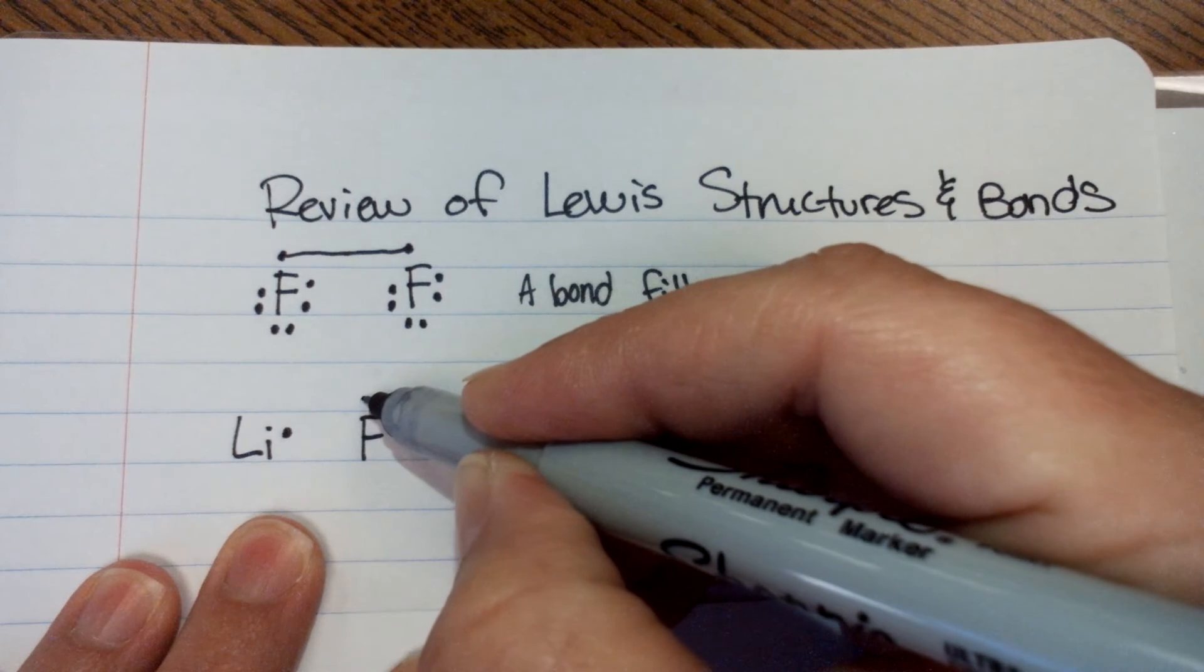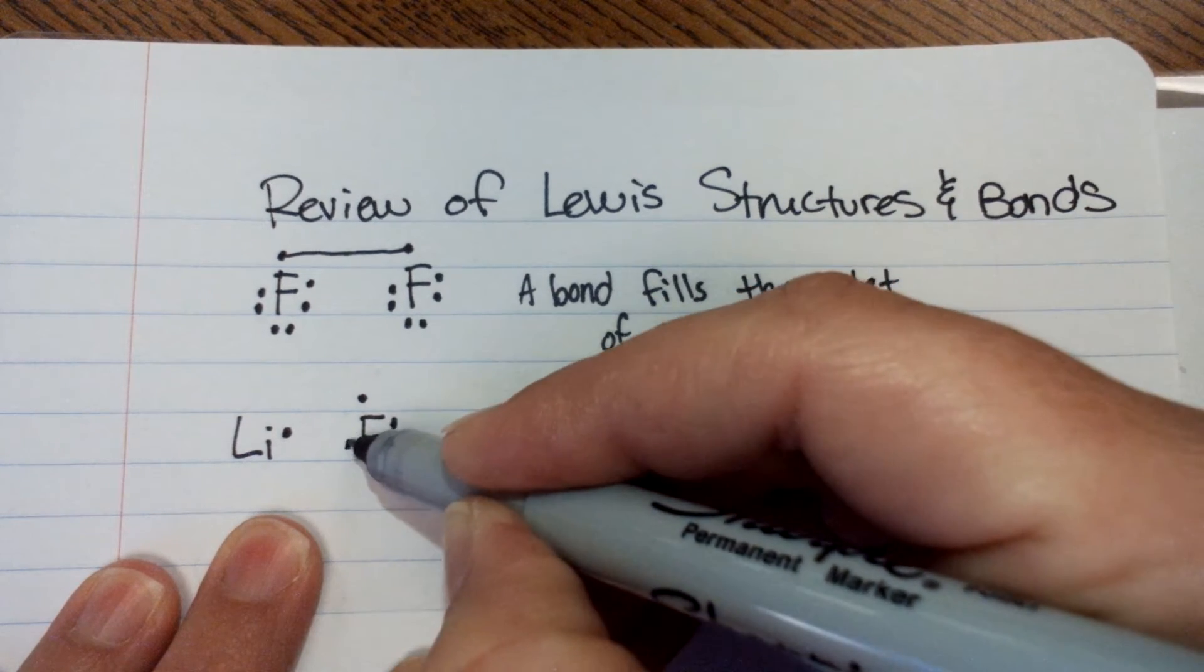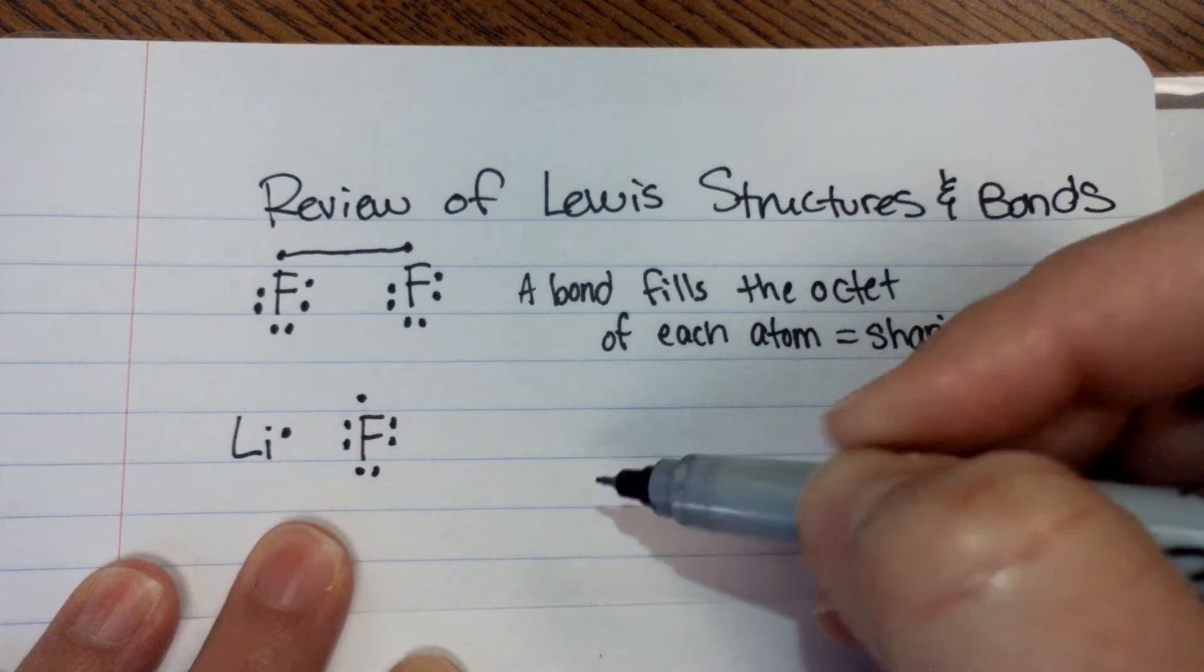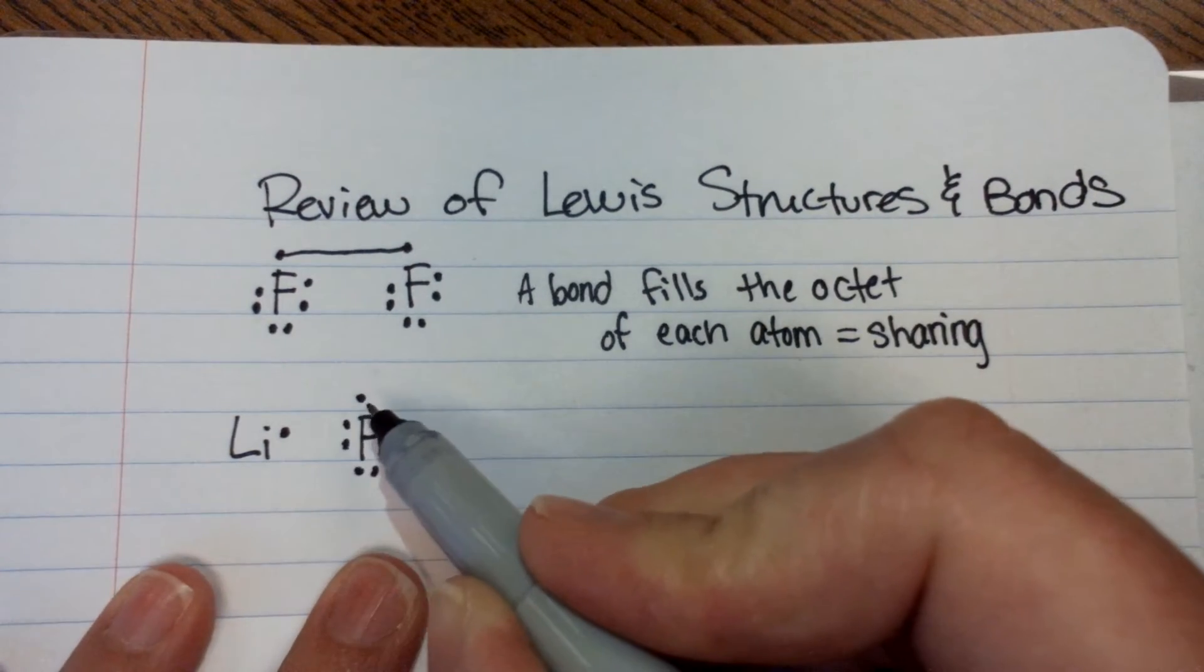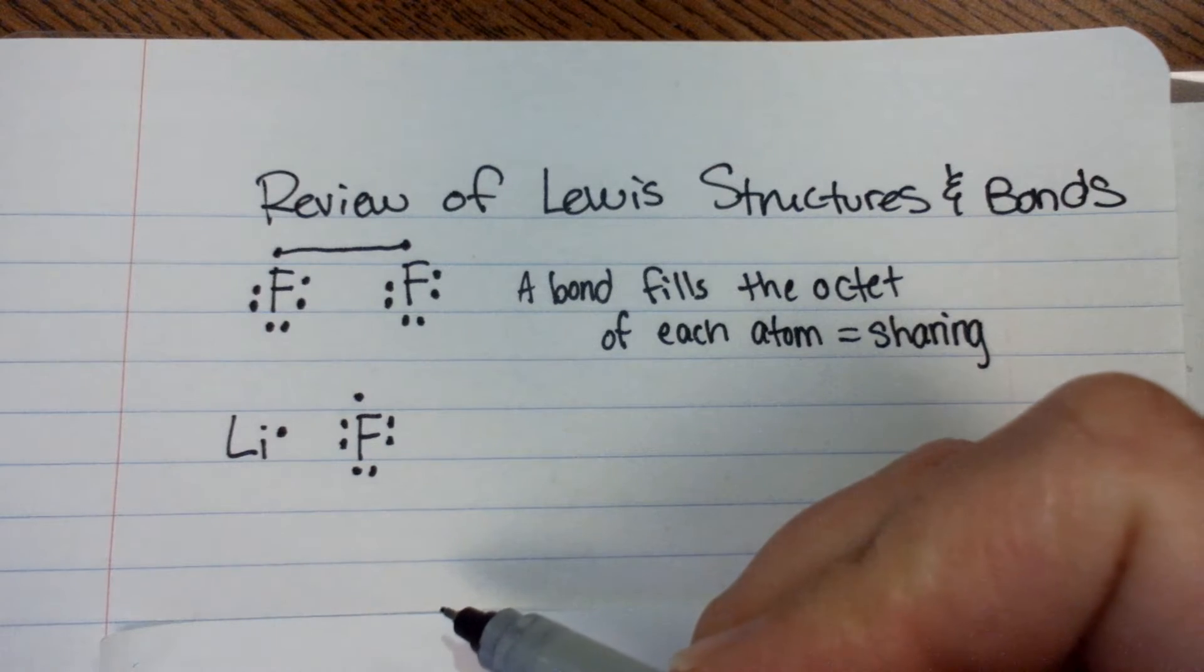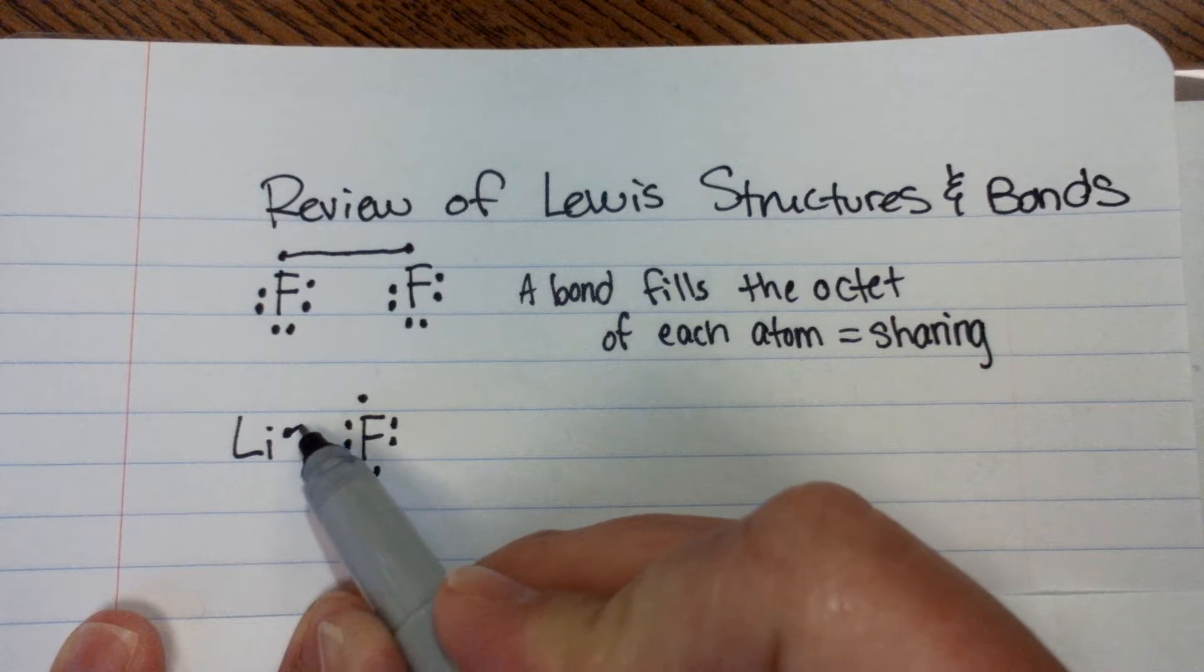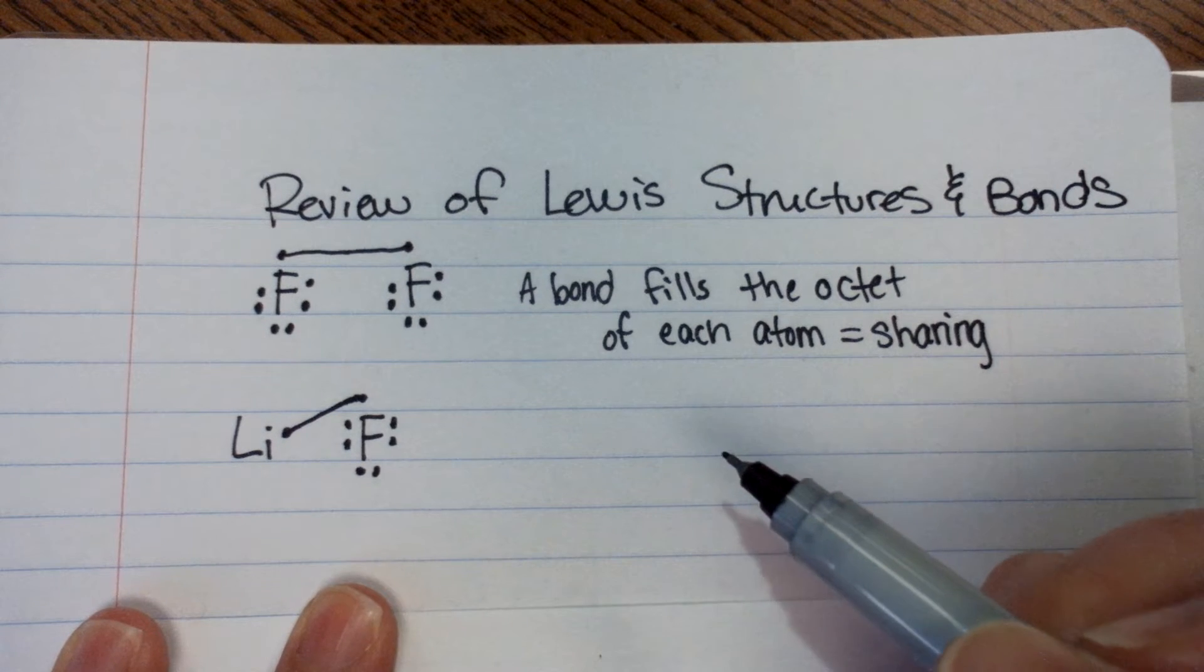Lithium could make a bond with fluorine. So let's draw a fluorine: one, two, three, four, five, six, seven. We'll make them look just like that one. And so all of those trends are kind of coming back to be put together with this bonding thing. Lithium's electron can make a bond there.